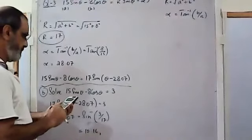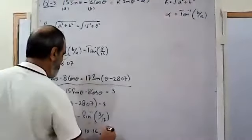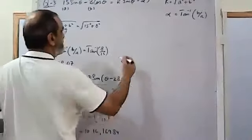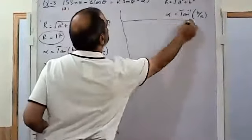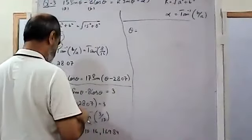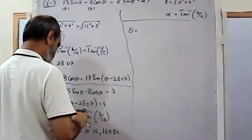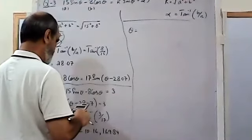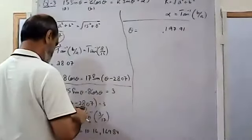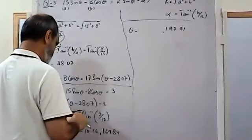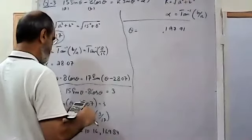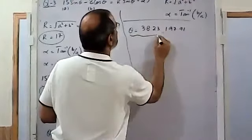The other value of sine is in the second quadrant: 180° - 10.16° = 169.84°. So θ - 28.07° = 10.16° gives θ = 38.23°, and θ - 28.07° = 169.84° gives θ = 169.84° + 28.07° = 197.91°.